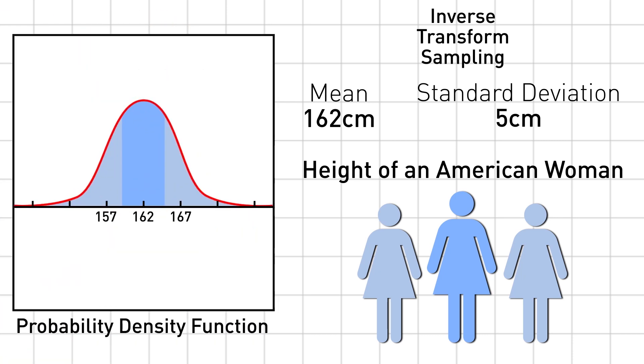You may have seen this picture. It's the probability density function. Roughly, it tells you how likely a randomly selected American woman is to be that height. The function is highest around 162, since that's the most likely height, and really tiny at 181, since it's unlikely for someone to be that tall.